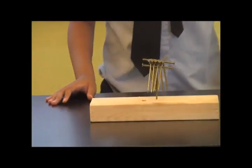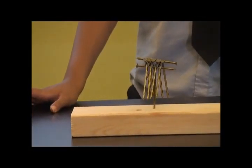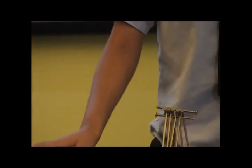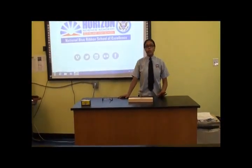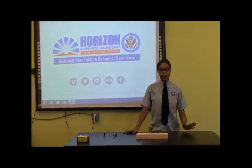For objects that are symmetrical, the center of gravity is right in the middle. For objects that are not symmetrical, like a baseball bat, the center of gravity is focused more at the heavier end.